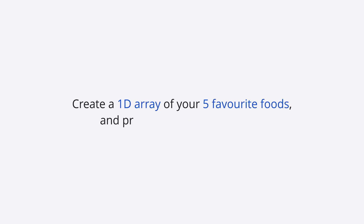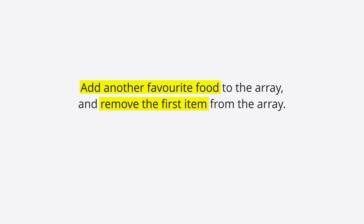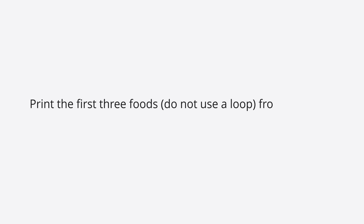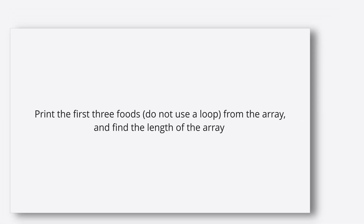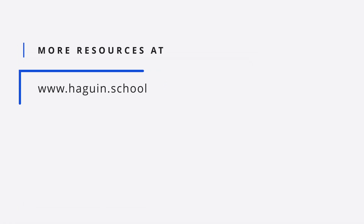Now let's look at some labs to improve your understanding of 1D arrays. Lab 1: Create a 1D array of your 5 favorite foods and print them out using a loop. Lab 2: Add another favorite food to the array, remove the first item from the array, then print out the new array using a loop. Lab 3: Print the first three foods without using a loop and find the length of the array.